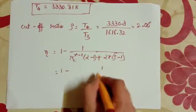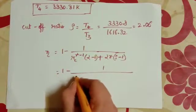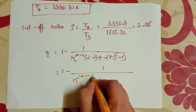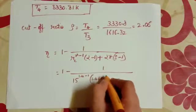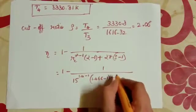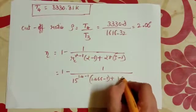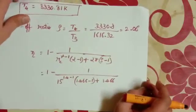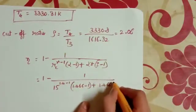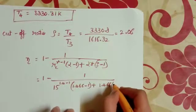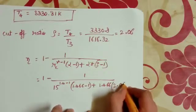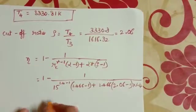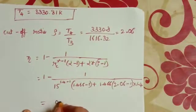We have to find thermal efficiency. 1 minus 1 divided by 15 raised to 1.4 minus 1, times 1.466 into 2.06 raised to 1.4 minus 1, divided by 1.466 minus 1 plus 1.466 into 1.4 times 2.06 minus 1.